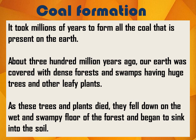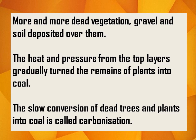Let us study the formation of coal. It took millions of years to form all the coal that is present on the earth. About 300 million years ago, our earth was covered with dense forests and swamps having huge trees and other leafy plants. As these trees and plants died, they fell down on the wet and swampy floor of the forest and began to sink in the soil. More and more dead vegetation, gravel and soil deposited over them. The heat and pressure from the top layers gradually turned the remains of plants into coal. The slow conversion of dead trees and plants into coal is called carbonization.